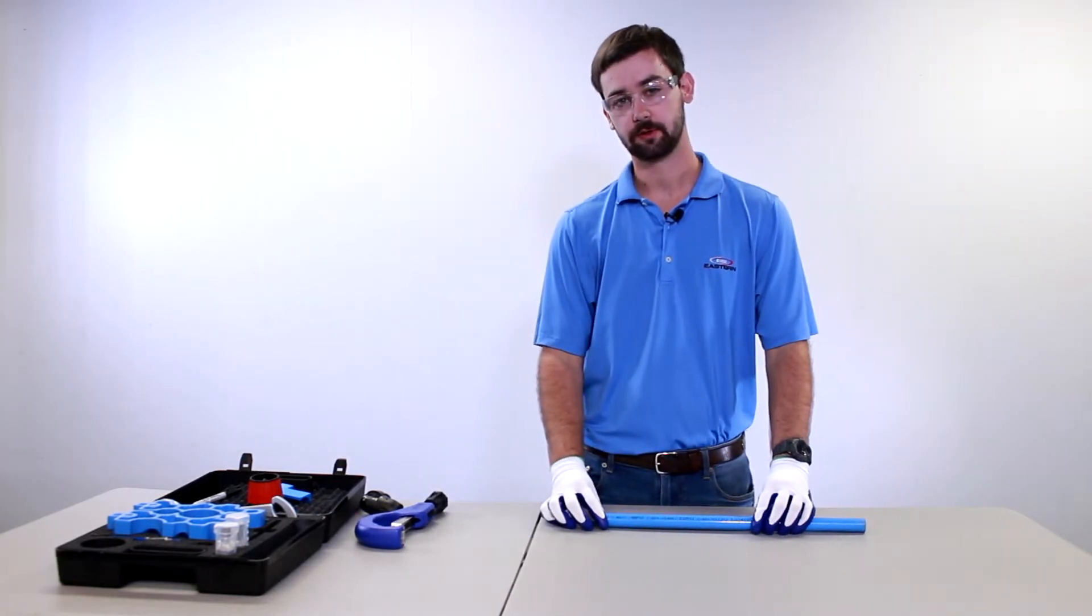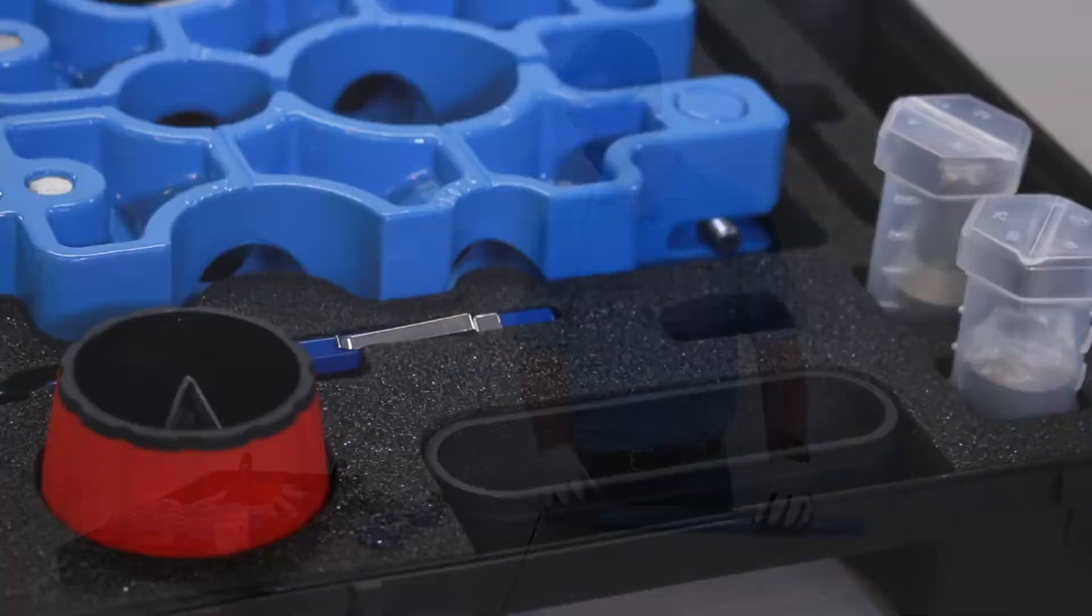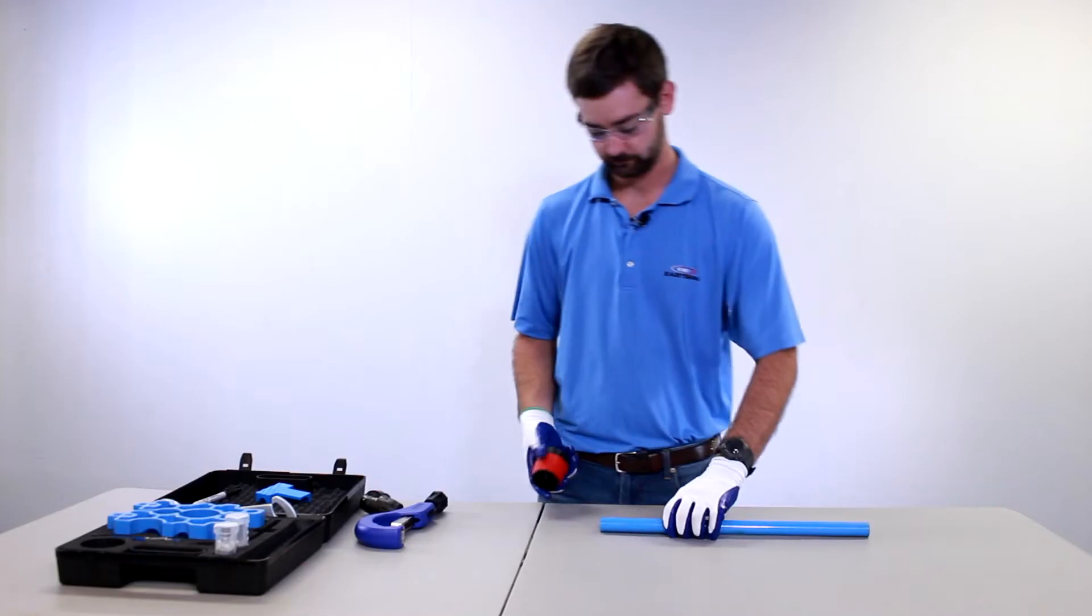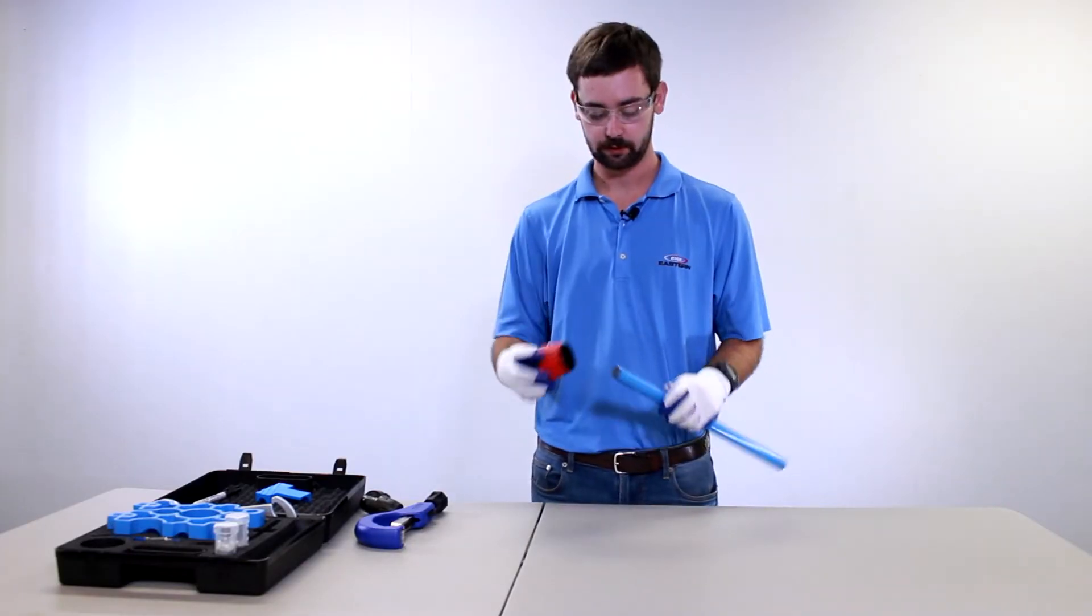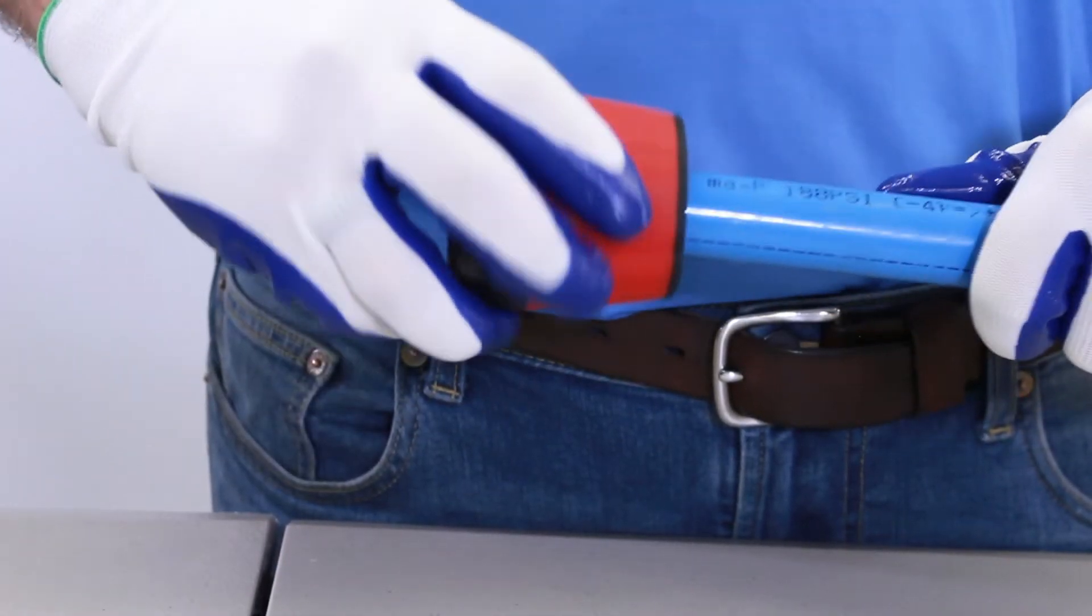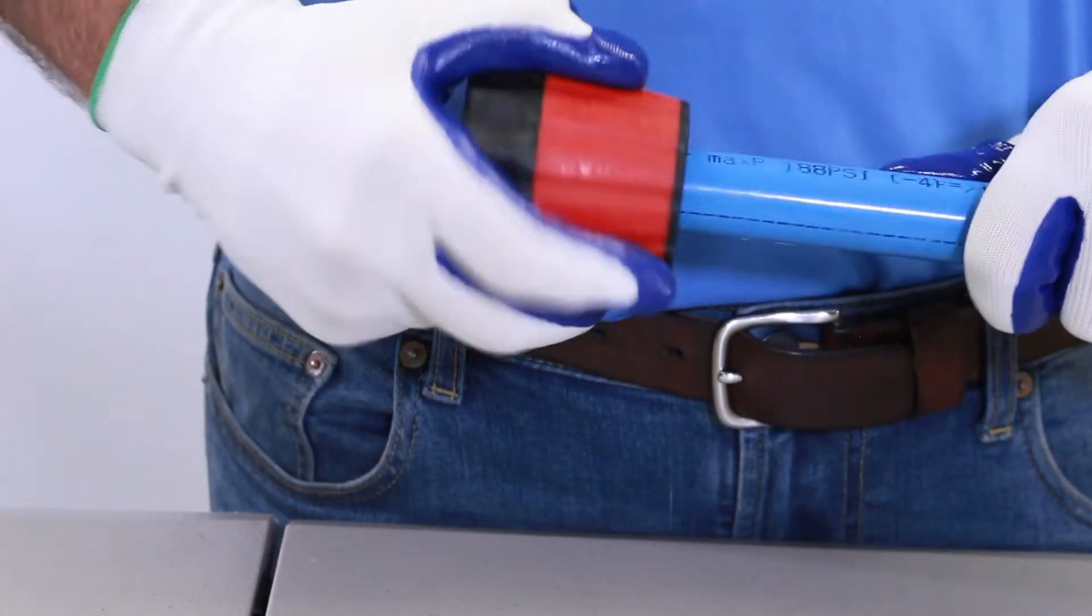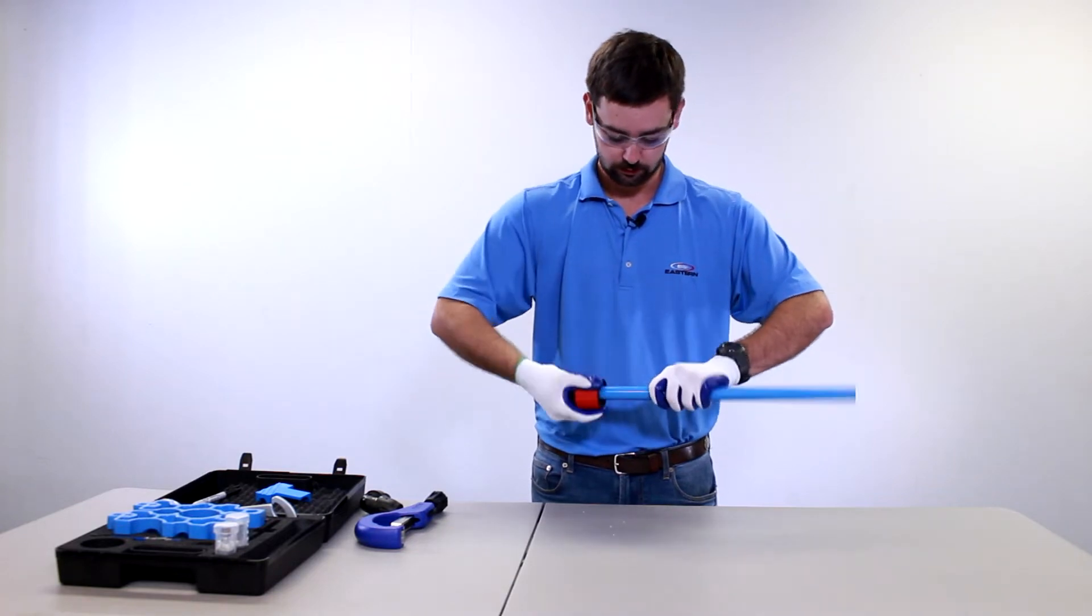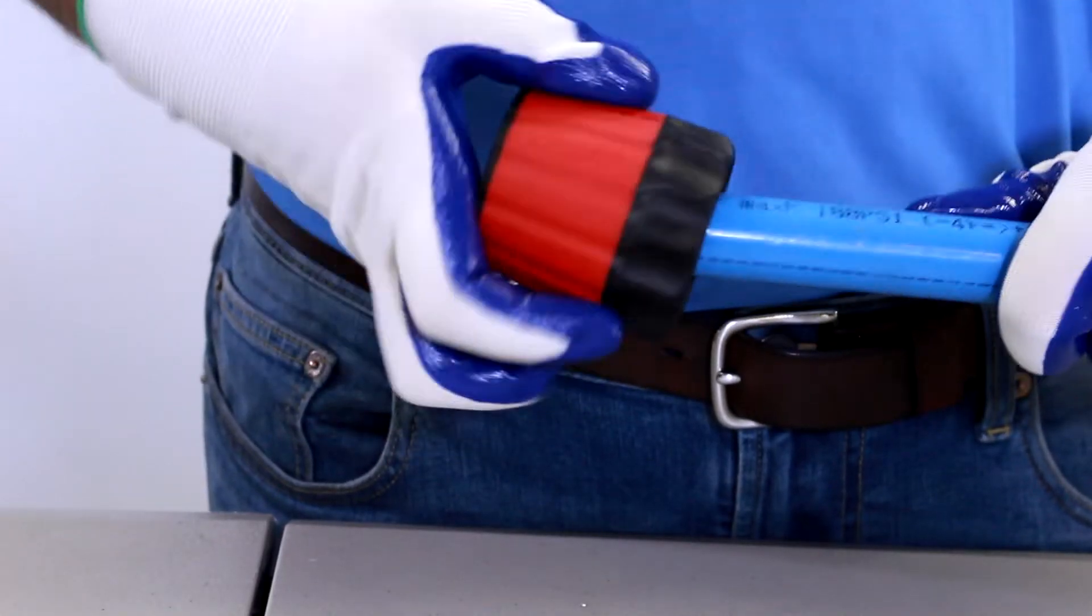So now we've got our pipe cut to the correct length that we're going to need. Our next step is to deburr the pipe. So what we're going to do is take our deburr here, stick it on the pipe, and just go around a few times here. And then we're going to flip it around and get the outside of the pipe.